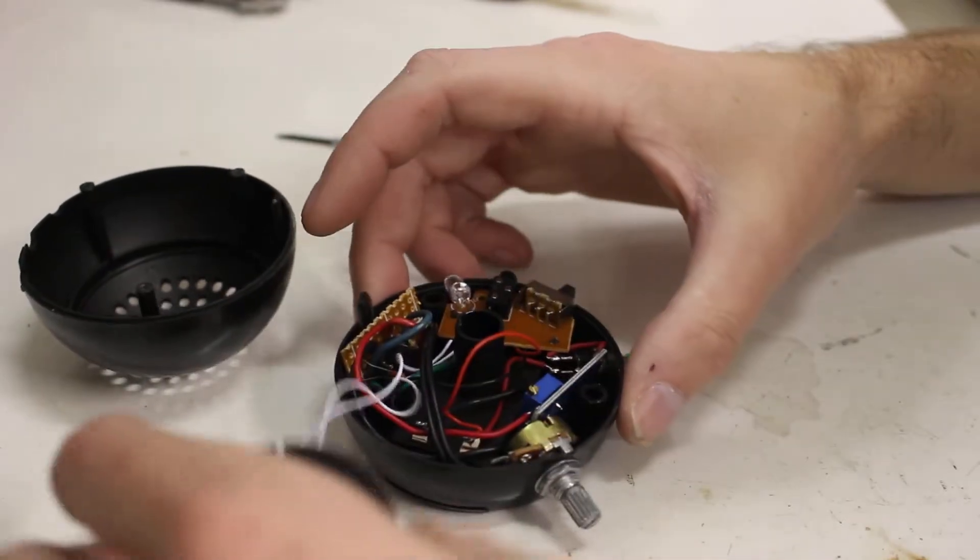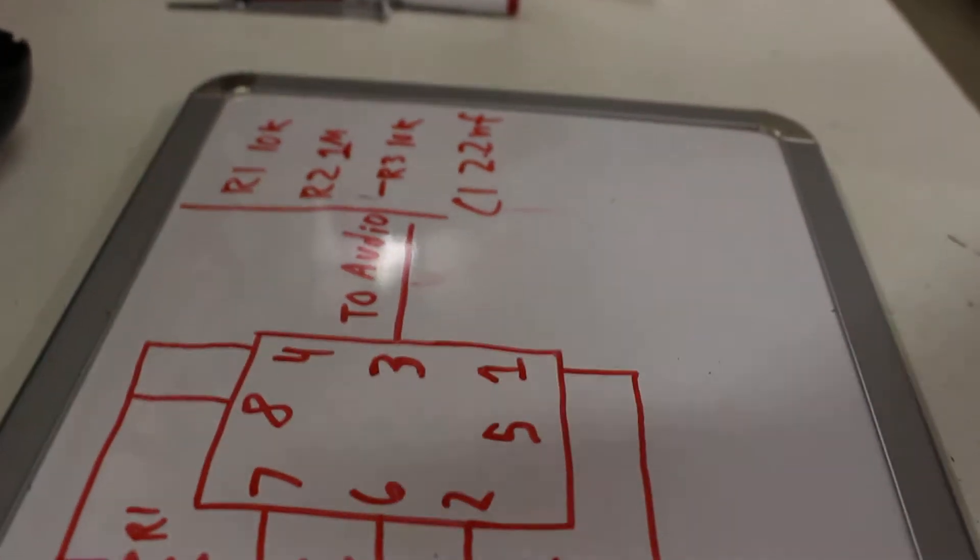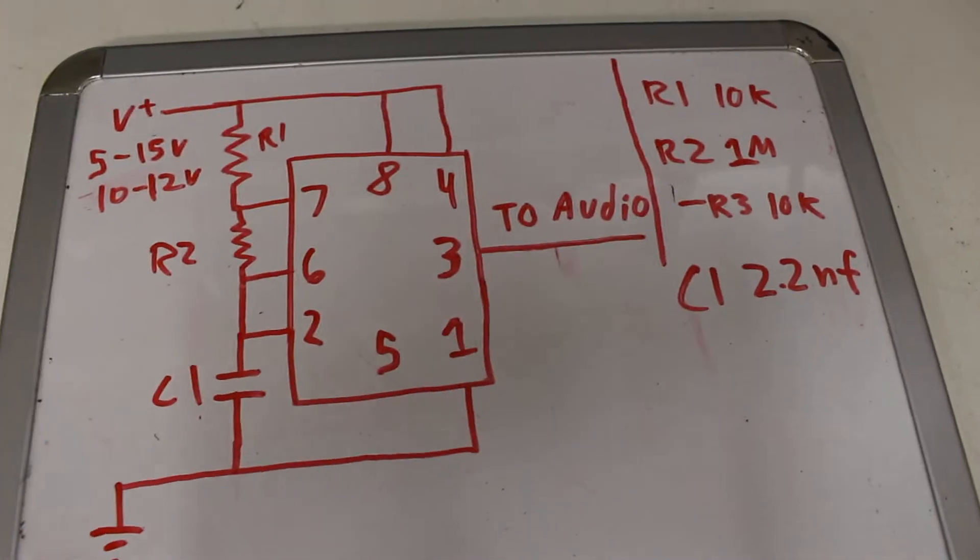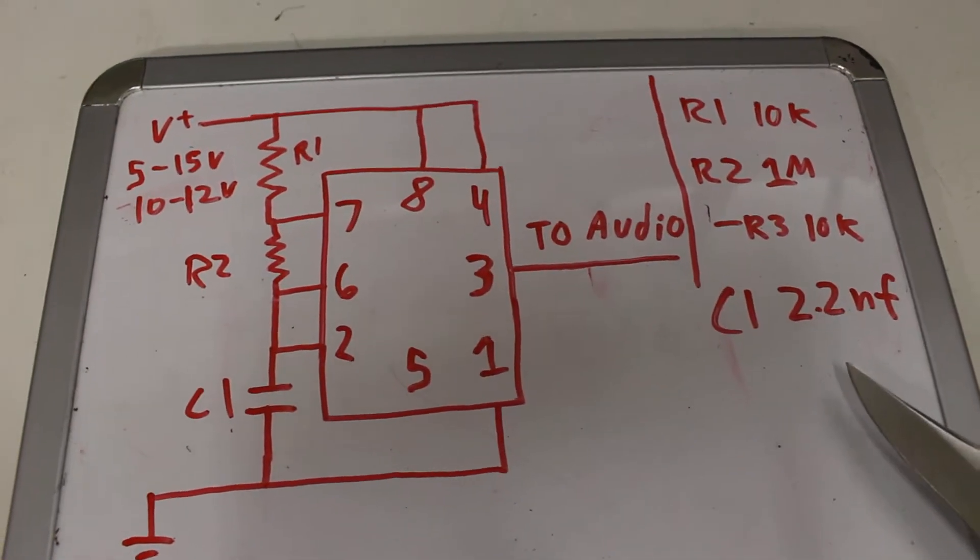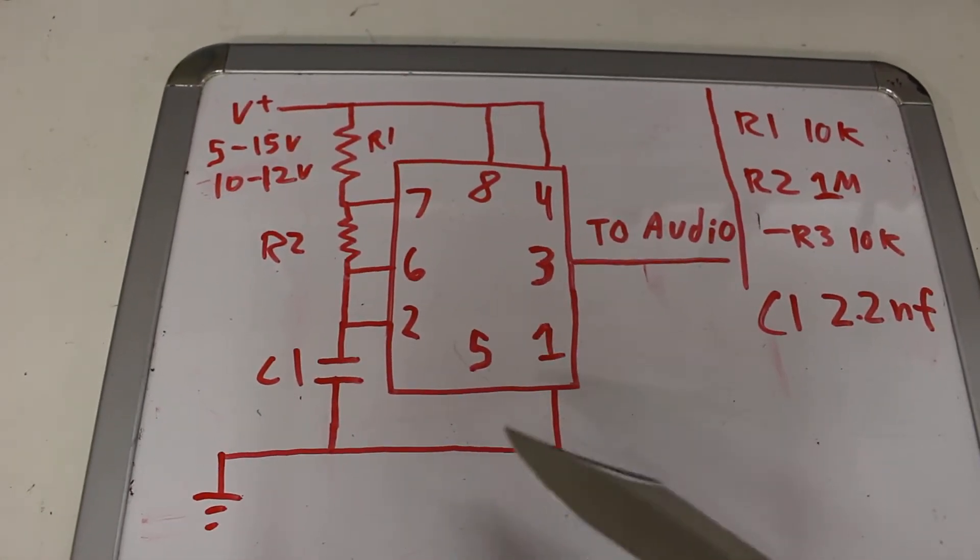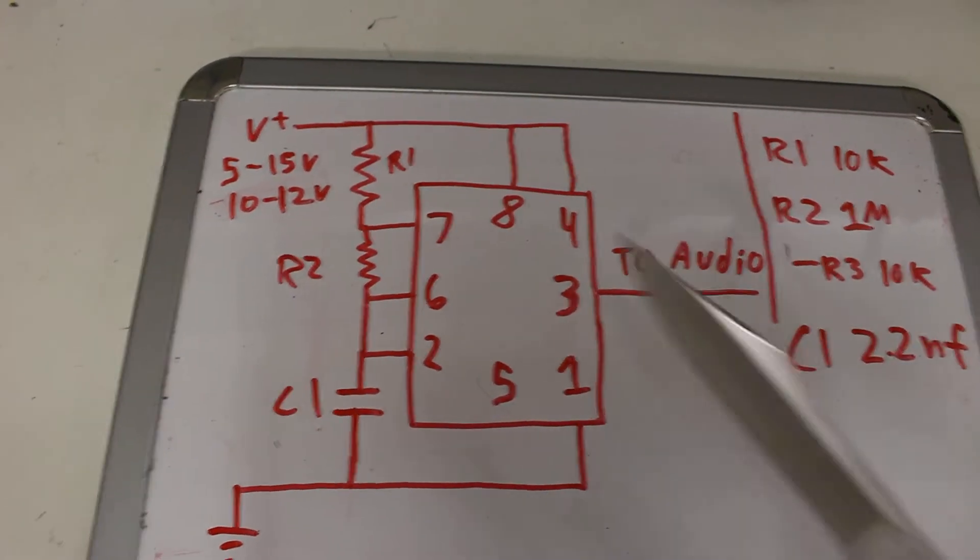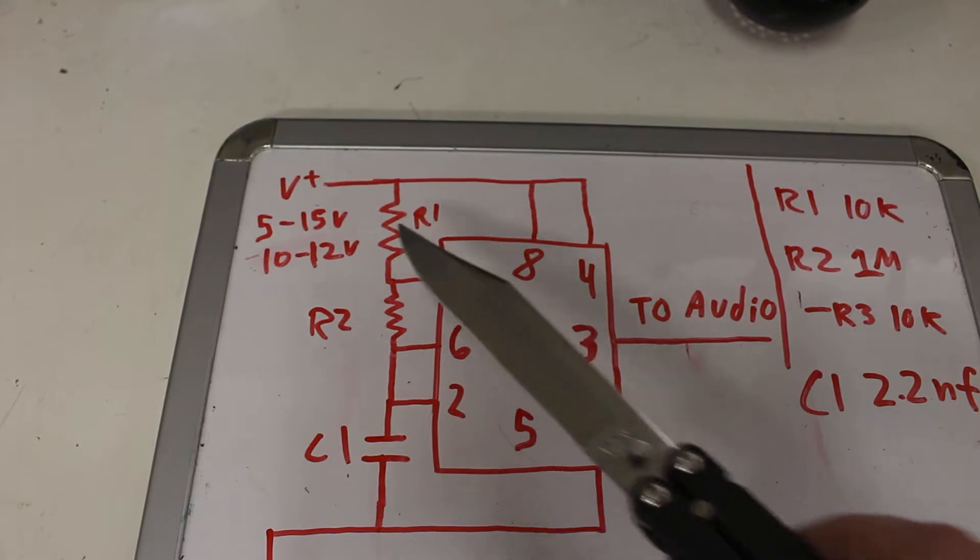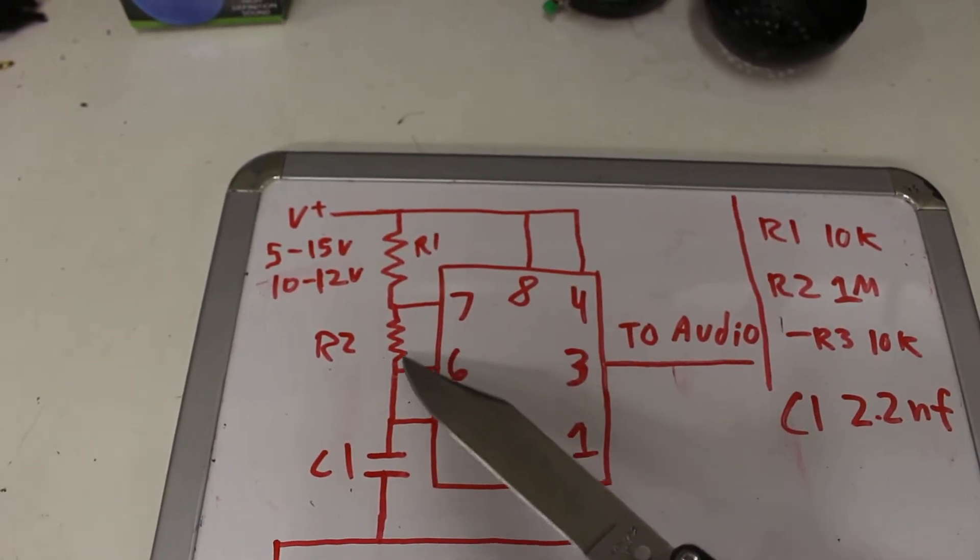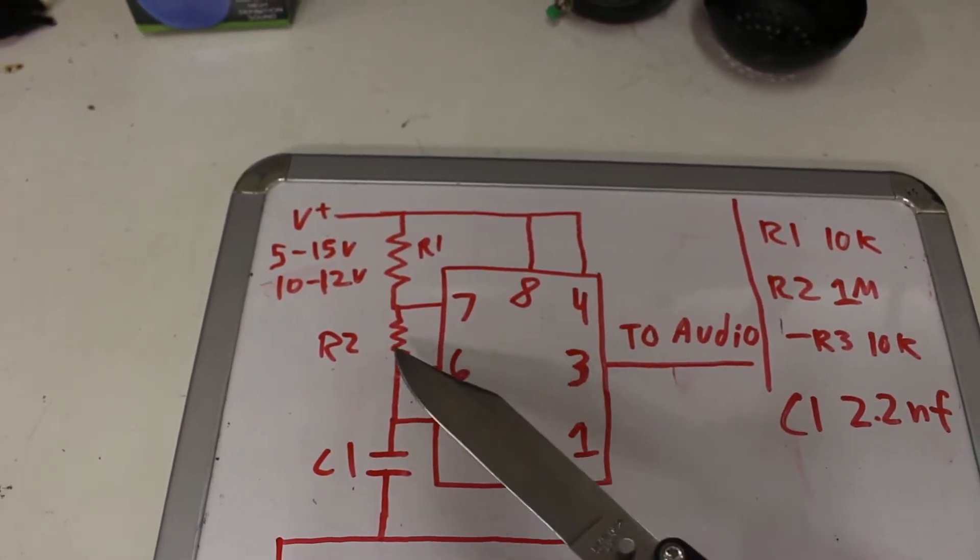So here's the schematic, let me get my camera set. Here we go. So the capacitor I'm using is a 2.2 nanofarad cap here. Pin 5 I'm leaving open. I think you use that for a reference voltage in some stuff, but this one I am not. It's not a simplicity. R1 is a 10k resistor.